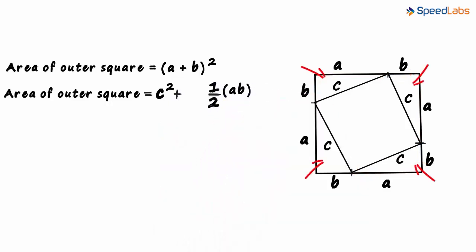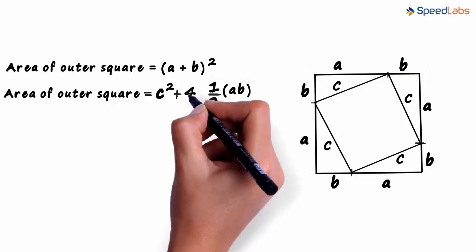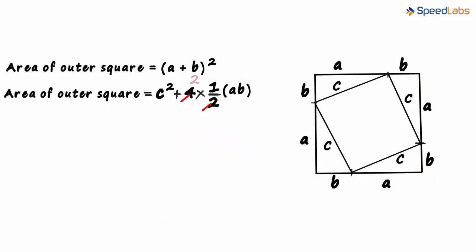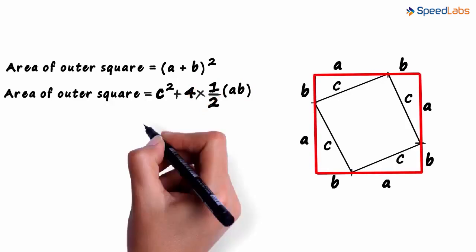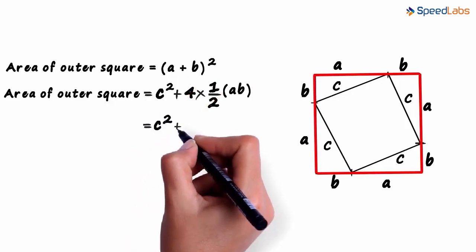To include the area of four triangles, we just multiply this with four. Their total area would be 4 × ½ab. Two times two is four, and we get the area of the outer square as c² + 2ab.